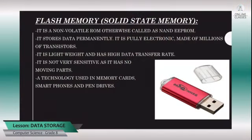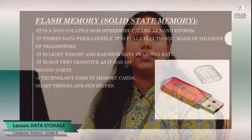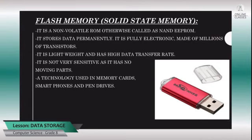Coming to flash memory: flash memory is also called non-volatile memory, and it is a type of EEPROM because we use a sudden charge of electricity to remove the contents. Writing and removing contents from flash memory is comparatively faster than other devices, and it is made up of millions of transistors. Flash memory is used mainly in memory cards, smartphones, and pen drives. Compared to optical and other devices, it has no moving parts, it is not very sensitive to damage, it is lightweight, and it has a high data transfer rate.